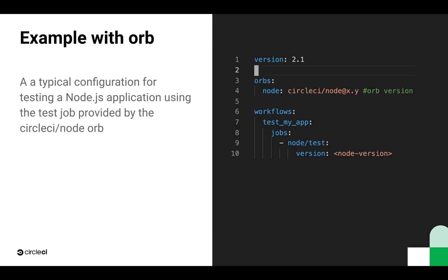This is a typical configuration for testing a Node.js application using the Node.js orb. We add the orb on lines 3 and 4, which allows us to then access jobs from that orb on line 9.